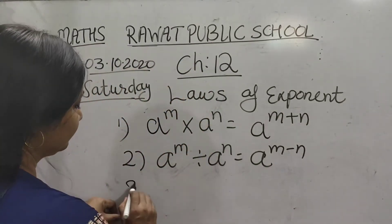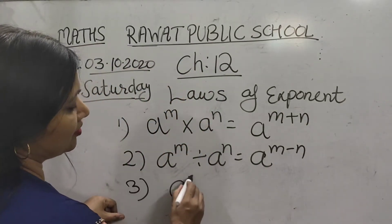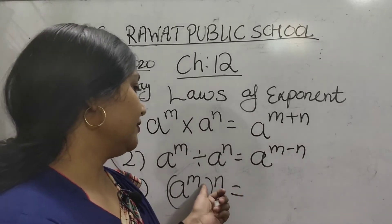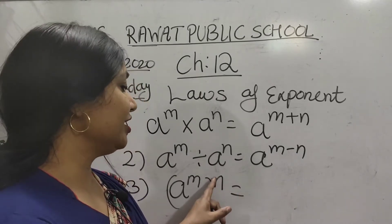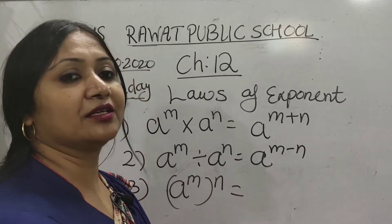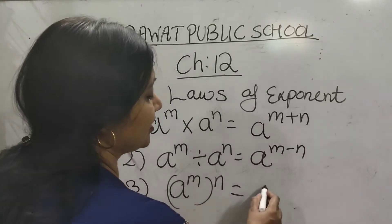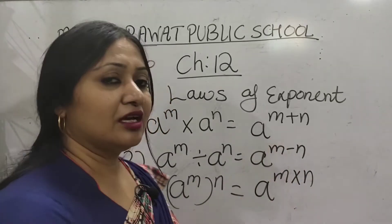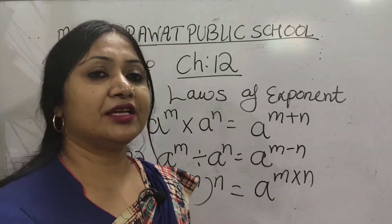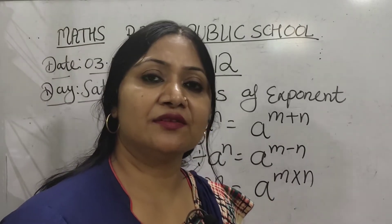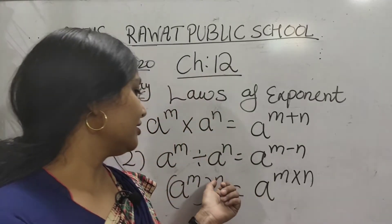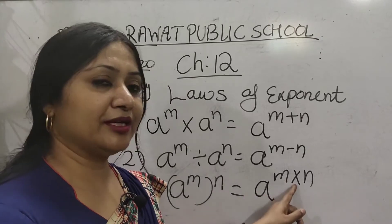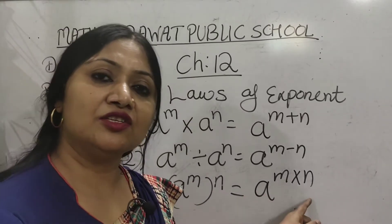Third law: when a base raised to power m is itself raised to power n — the base is equal but there are different powers with an invisible multiplication sign — then the result is a raised to power m into n, meaning the powers are multiplied: (a^m)^n = a^(m×n).